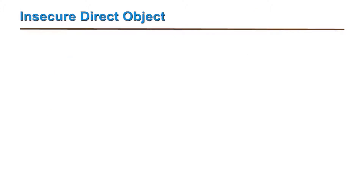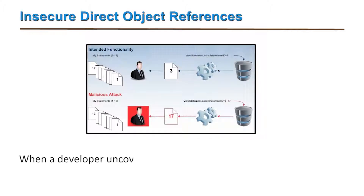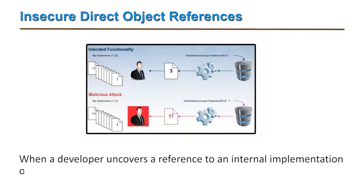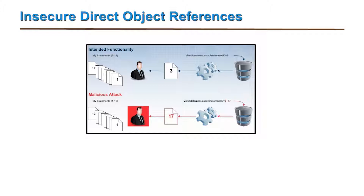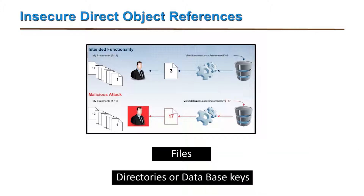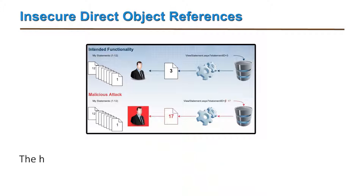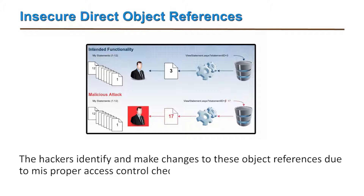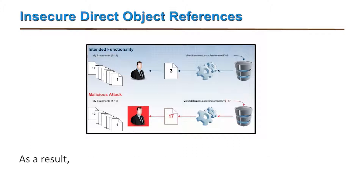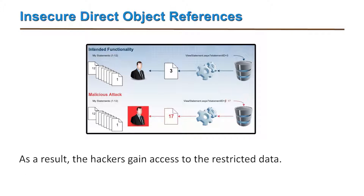The fourth one is insecure direct object references. When a developer uncovers a reference to an internal implementation object, there occurs a creation of a direct object reference. The implementation of objects may include files, directories, or database keys. Hackers identify and make changes to these object references due to improper access control checks, and as a result gain access to restricted data.